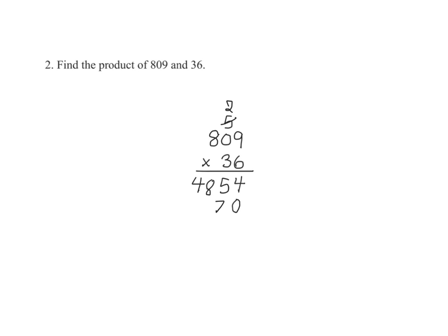And now we multiply 3 times 0, which gives us 0, and we add the 2. And 0 plus 2 is 2. And finally, we multiply 3 times 8, which gives us 24.